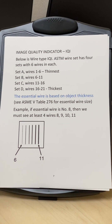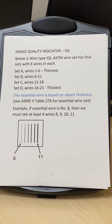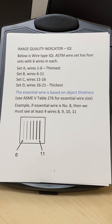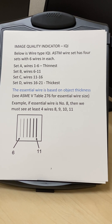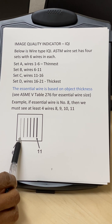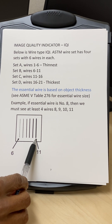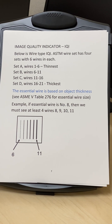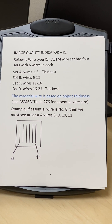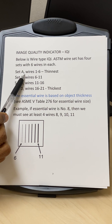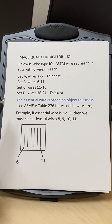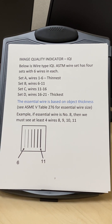IQIs come in two types: hole type and wire type. Here I will discuss the wire type, which comes in various diameters. Wire number 6 is a thinner wire and number 11 is a thicker wire. Wire type IQIs come in four sets: Set A (wires 1–6), Set B (wires 6–11), Set C, and Set D. Wire number 21 is the thickest.